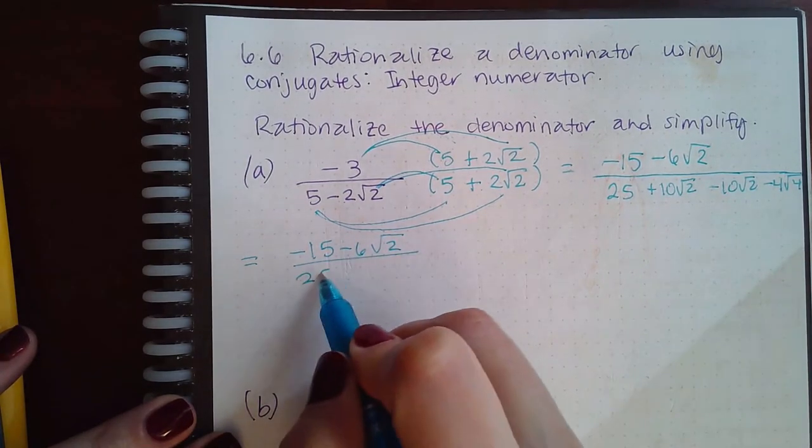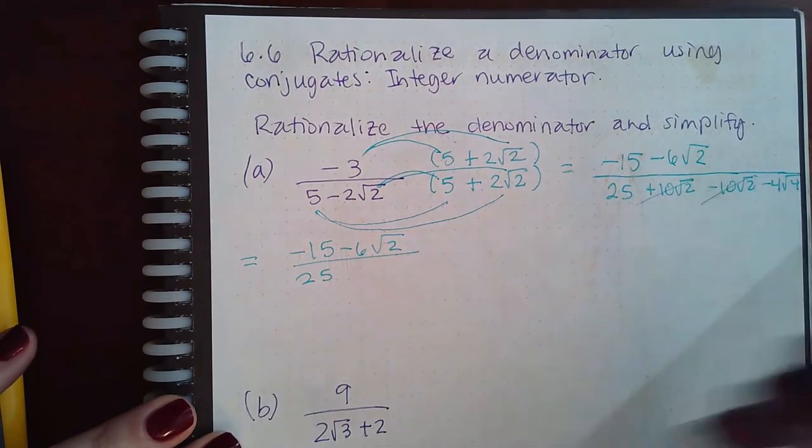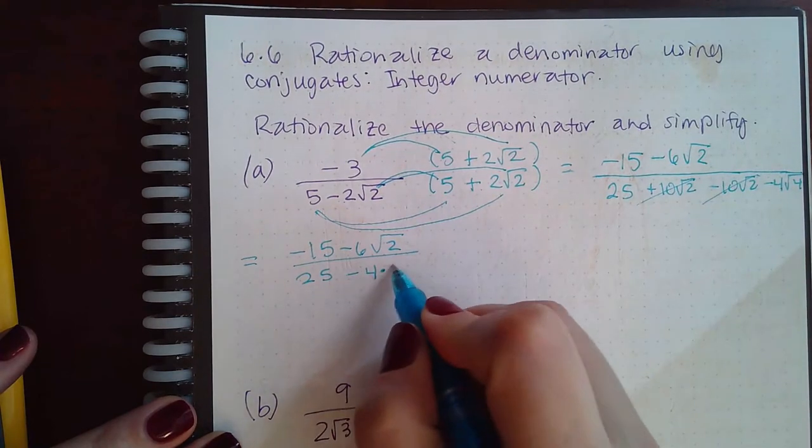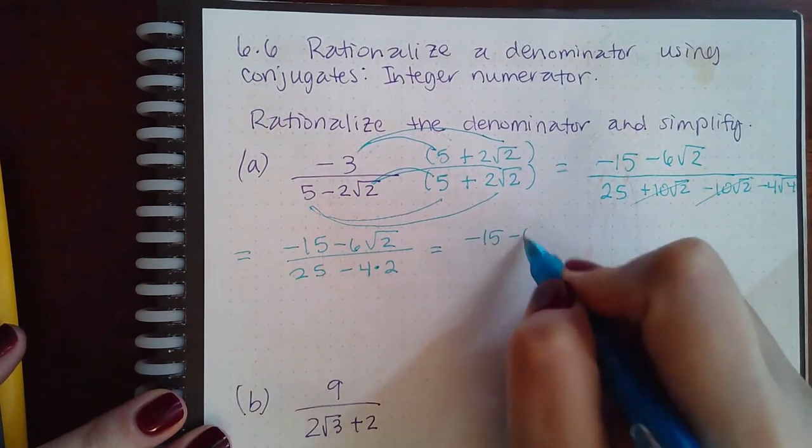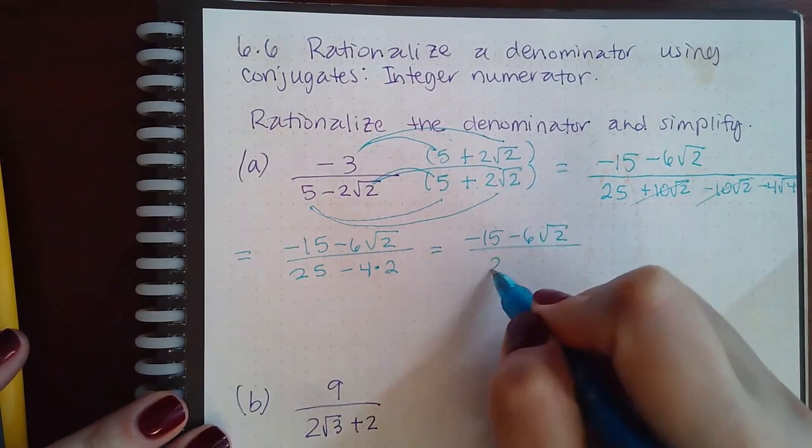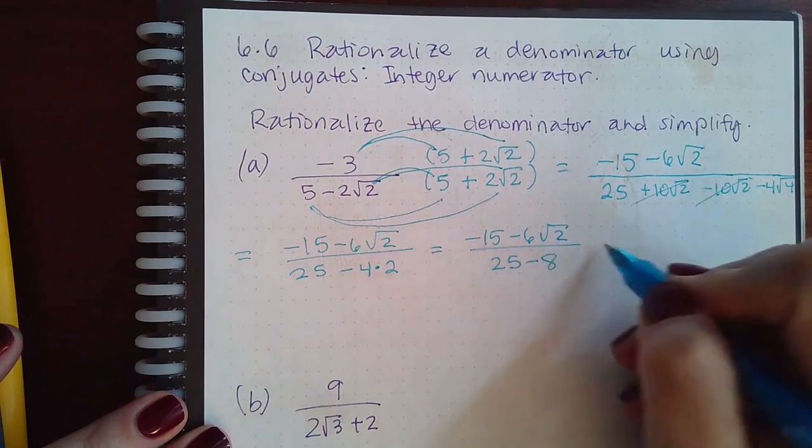I end up with 25. These two guys will cancel. And minus 4 times 2 because the square root of 4 is 2. So that's 25 minus 8.